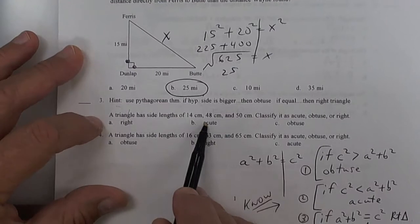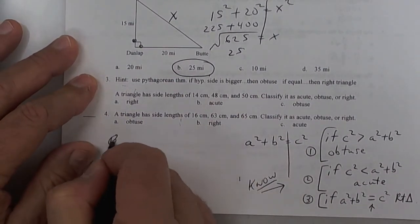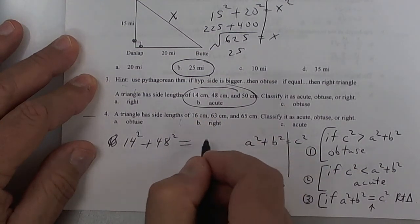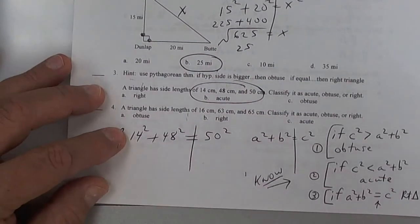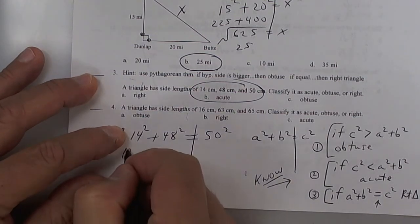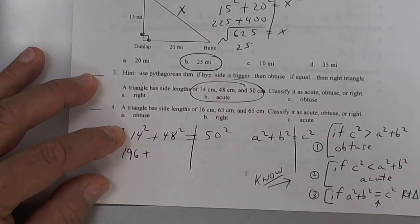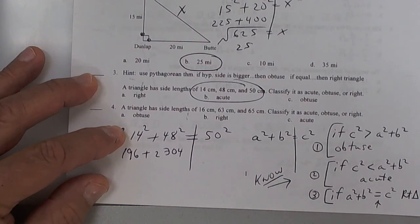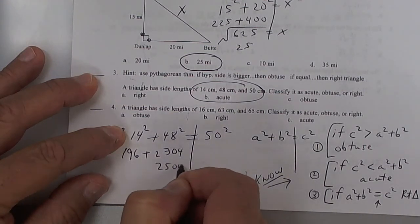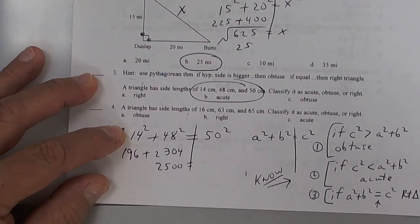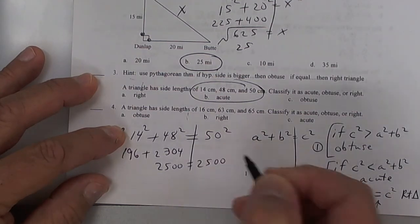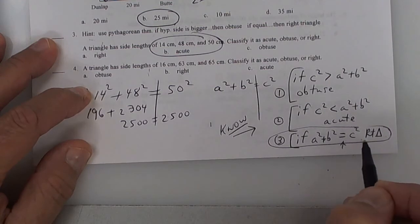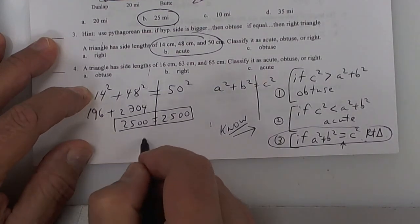So you're going to add up 225 plus 400, and that's going to give you 625, and then you're going to take the square root of that to get rid of that square, and you're going to get 25. So it should be this one. But some people are saying the answer is wrong, but that's the one I would go with. Next. Use Pythagorean's theorem. So look up here. I'm only going to work one of these. So put 14 squared plus 48 squared equals 50 squared.